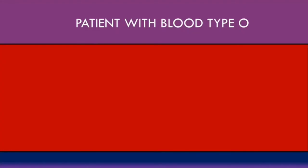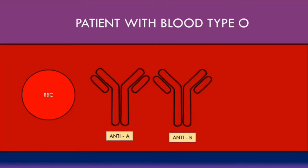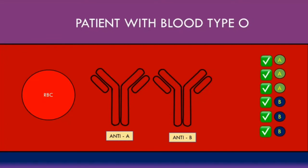Finally, a patient with blood type O will have red blood cells that do not have either A or B antigens on their surface. Patients with blood type O will have both anti-A and anti-B antibodies in their plasma. When exposed to A and B antigens through food, the immune system will produce antibodies against both, because the red blood cells in blood type O patients have no A or B antigens — so the immune system recognizes them both as foreign proteins and produces anti-A and anti-B antibodies.